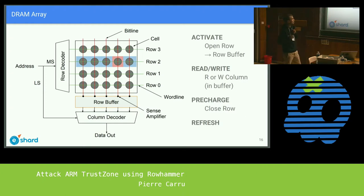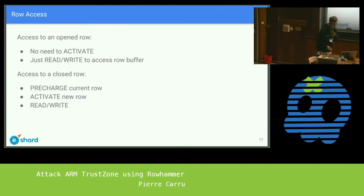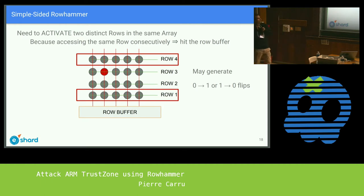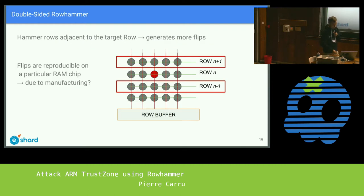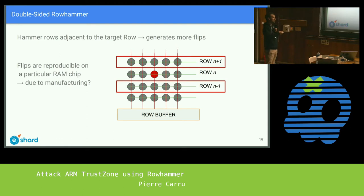The issue is, if you access a single row — say row two — several times consecutively, you'll just hit the row buffer without activating the same row many times. So to create faults you need to access two distinct rows in a single array. For example, access row one then row four alternately in a loop. To target row N most efficiently, hammer rows N-1 and N+1 — a kind of double-sided attack.